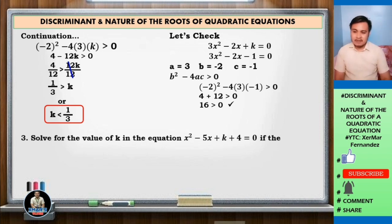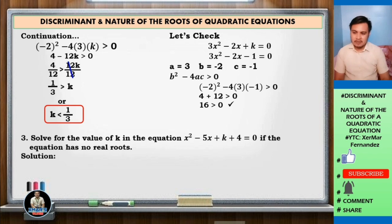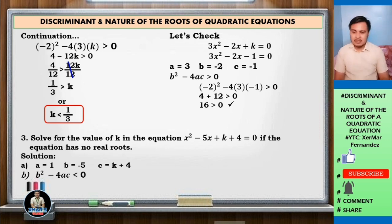Number 3: solve for the value of k in the equation x squared minus 5x plus k plus 4 equals 0, if the equation has no real roots. Identify a, b, and c: a equals 1, b equals negative 5, c equals k plus 4. The discriminant is b squared minus 4ac. Since there are no real roots, the discriminant is less than 0, so b squared minus 4ac is less than 0.